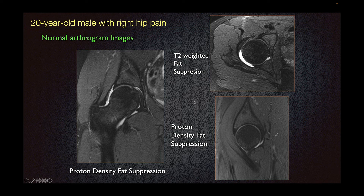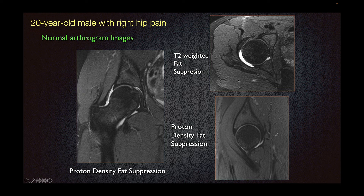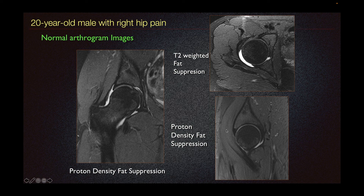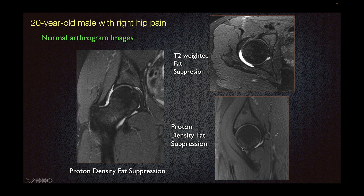When evaluating the labrum, we look at all the sequences and all the planes. To look at the superior labrum, it is best depicted on our coronal imaging showing this triangular hypointense band. In our axial imaging, we best see the anterior and posterior labrum on T2-weighted fat-suppressed imaging, whereas the anterior superior labrum is best seen on our sagittal imaging, such as proton-density fat-suppressed images.